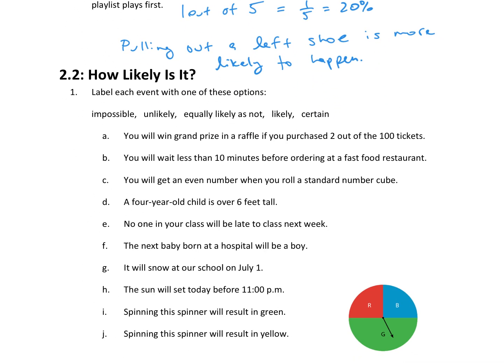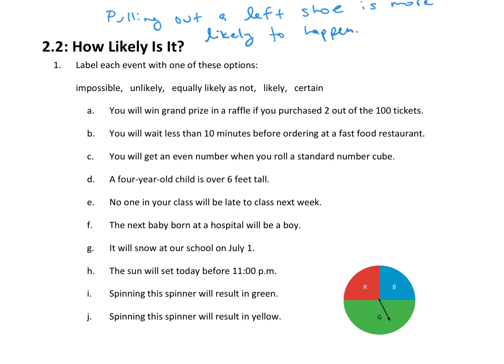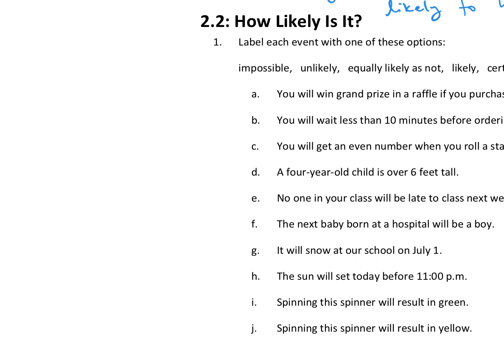Let's take a look at activity 2. In this activity, I want you to label each event with one of these options: impossible, unlikely, equally likely as not, likely, and certain. One of the things that you might see throughout this entire unit is something called a standard number cube. Just note that that just means a die with the numbers 1 through 6 on it.